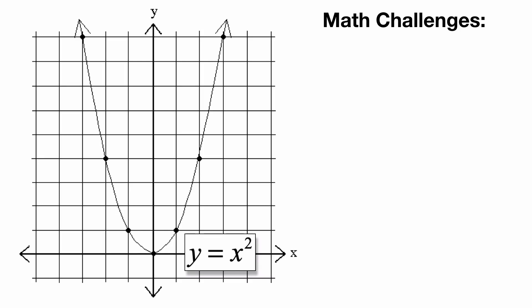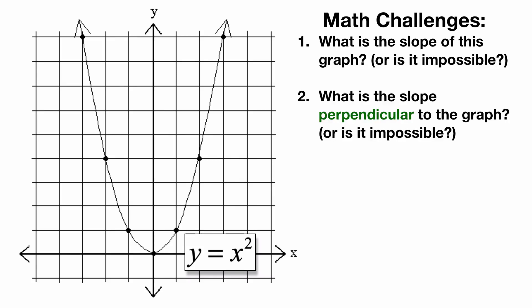So the math challenge was starting with the function y equals x squared. What's the slope of the graph, or is it impossible? And what's the slope perpendicular to the graph, or again, is it impossible? And the reason why I'm covering these things is because folks on the level try thinking seem to indicate that you can't measure angles to a curve and that you certainly can't find a perpendicular to a curve. Well, we'll see if it is possible.